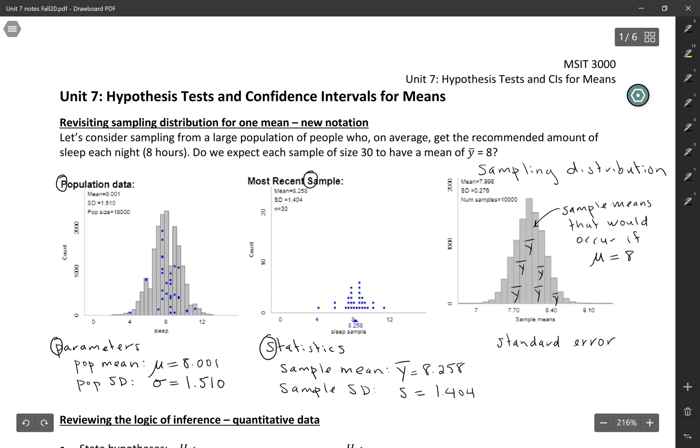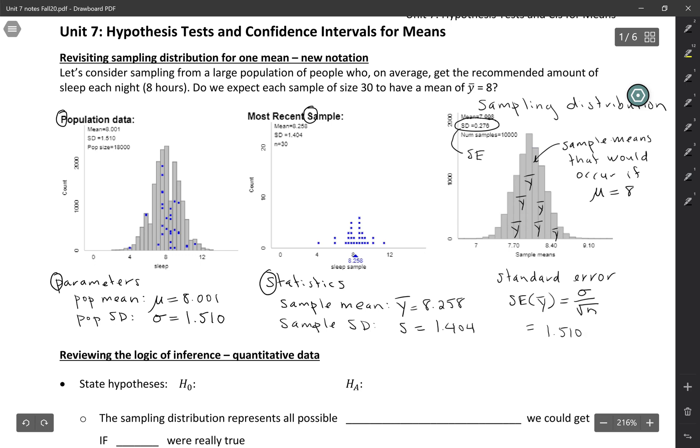So this number here, the standard deviation of the sampling distribution, we call that the standard error. So up until now, we've just said that the standard error is less than the population standard deviation, but they actually have a very specific relationship. So if you want to calculate the standard error of y bar, that's what this notation means, you take the population standard deviation, which is sigma, and you divide by the square root of n. So in this case, we would take 1.510, which is the standard deviation of the population, divide by the square root of the sample size, which was 30, and we get .276. So notice that's the same number that we get from the simulation.